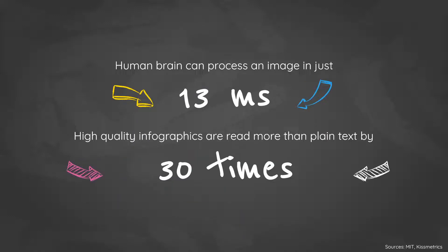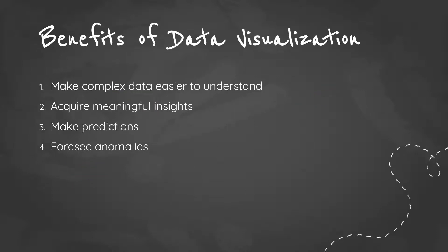In fact, did you know that the human brain can process an image in just 13 milliseconds? And high quality infographics are 30 times more likely to be read than plain text. Indeed, compared to spreadsheets and reports, our brains respond to images, visuals, charts, and graphs more easily and quickly. With our brains so attuned to visuals, this implies that we can make complex data easier to understand with the help of visuals.